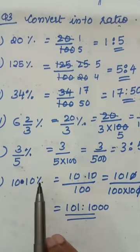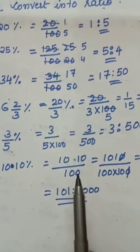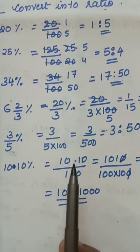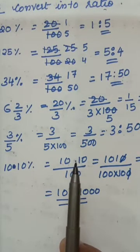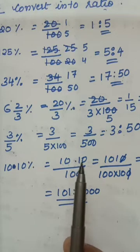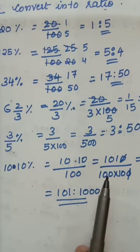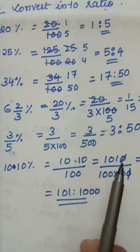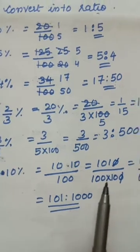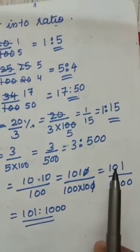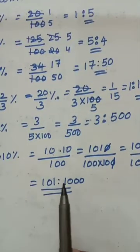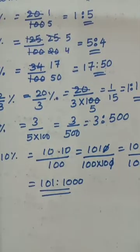10.10 percentage: divided by 100. Take out the decimal point — after the decimal there are 2 digits, so divide by 100 to vanish the point, giving 1010. Divide by 100 multiplied by 100: cut out to get 101 divided by 1000. Ratio form: 101 ratio 1000.